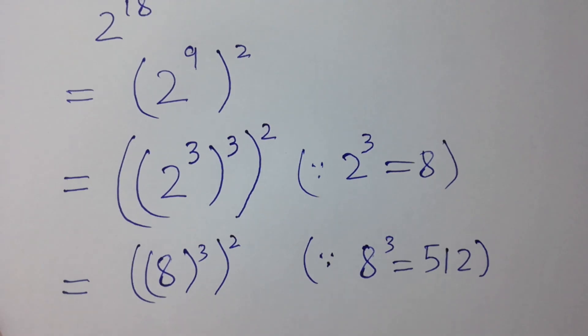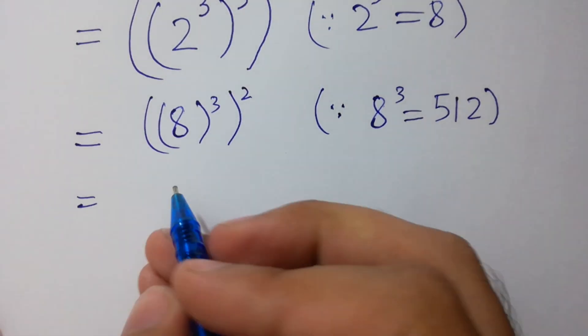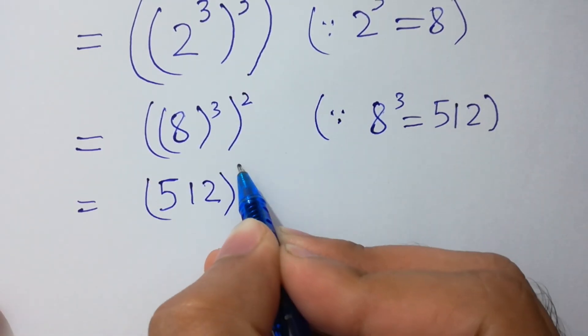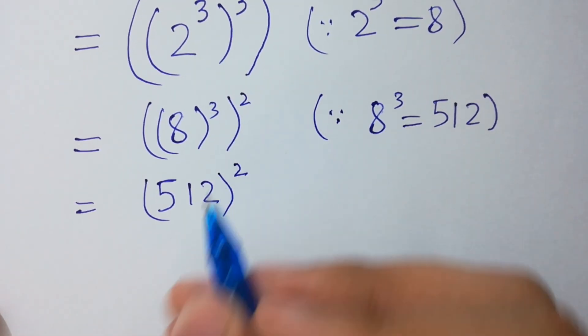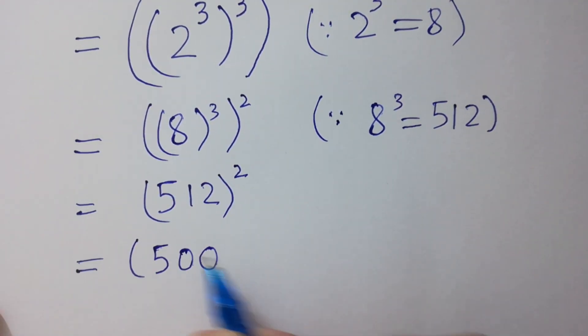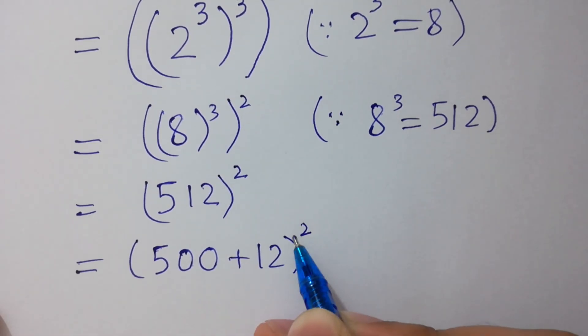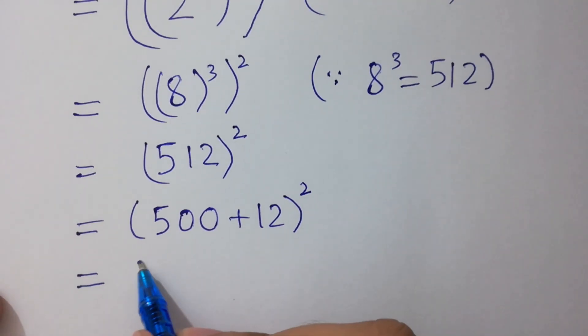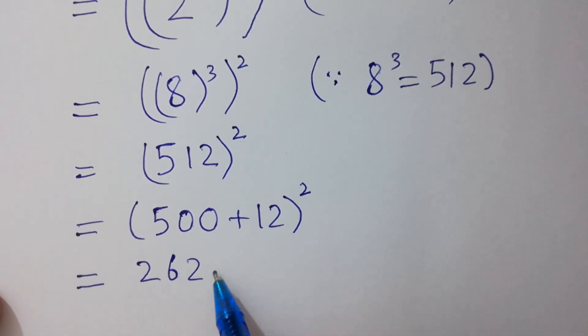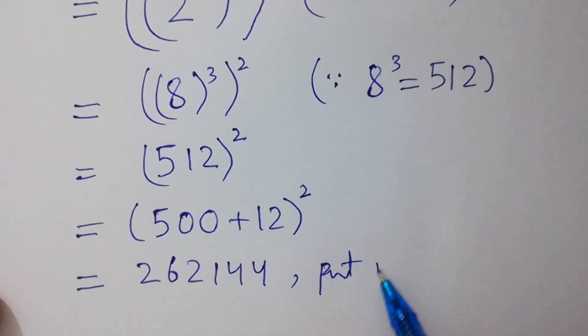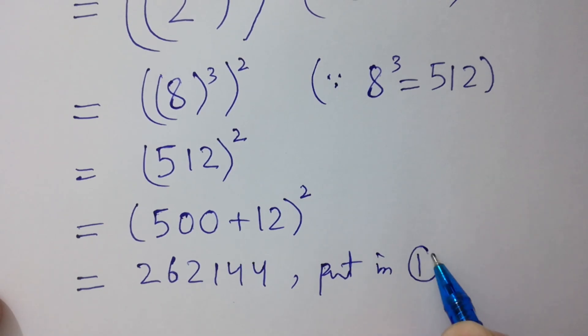we can write 512 to the power 2, which is equal to (500 plus 12) to the power 2, which equals 262,144. Let's put this in the first equation: